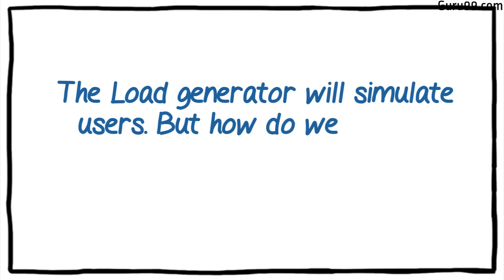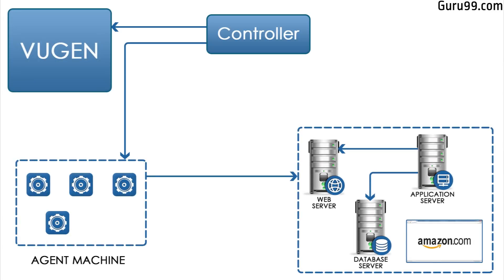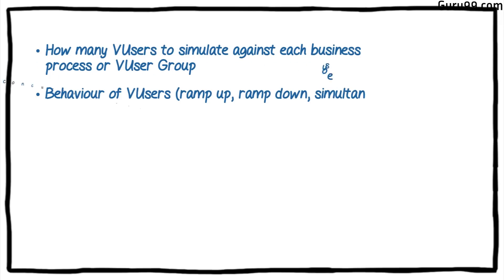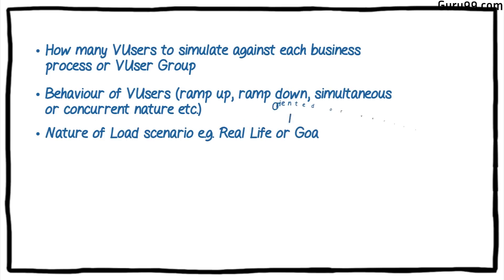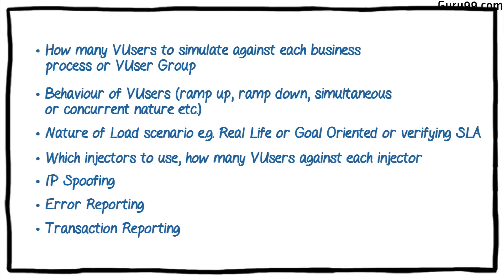Problem 3: The load generator will simulate users, but how do we control which users will access what section of the website? Enter the controller. The controller is the primary component of LoadRunner which controls the load simulation by managing how many VUsers to simulate against each business process or VUser group — including behavior of VUsers (ramp up, ramp down, simultaneous or concurrent nature), the nature of the load scenario (real life, goal oriented, or verifying SLA), which injectors to use, how many VUsers against each injector, IP spoofing, error reporting, and transaction reporting.